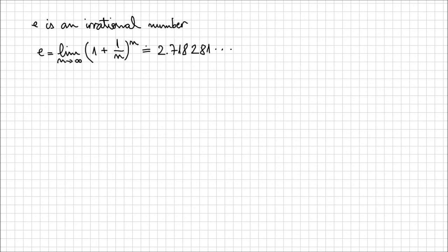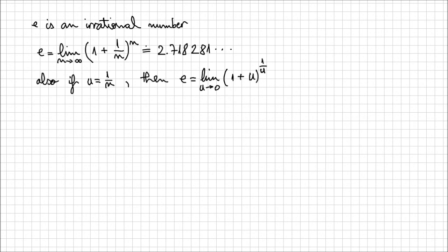We can also rewrite this expression using a substitution. If we let u equal 1/n, then since n approaches infinity, u approaches 0. So we can rewrite e as the limit when u approaches 0 of (1 + u)^(1/u). Now we have defined the number e, and since we're talking about exponential functions, let's see how we can represent e^x similarly.